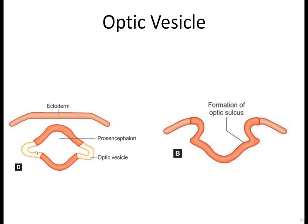Observe it very closely. These are the projections of the optic sulcus. Meanwhile, these two ends have fused together. This fusion forms the entire tube called the neural tube. What happens to the ectoderm on both sides? The ectoderm now overlies the neural tube. On top is the surface ectoderm, and below the surface ectoderm we have the neural tube. On the sides of the neural tube, the optic sulcus is gradually transforming itself into the optic vesicle.